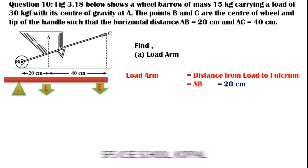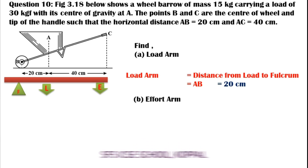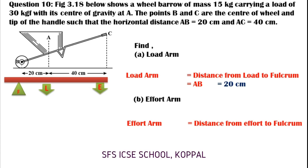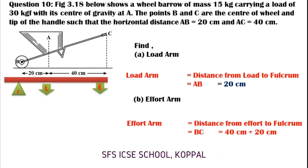Now, Part B — effort arm. The effort arm equals the distance from effort to fulcrum. Here it is BC, and that equals 40 plus 20, which is 60 cm.